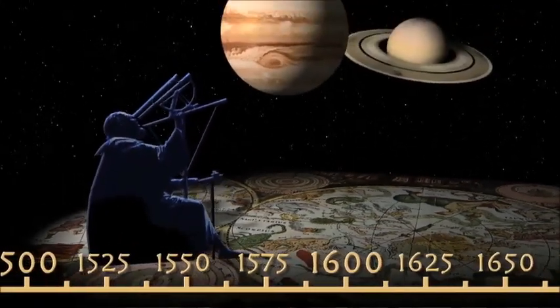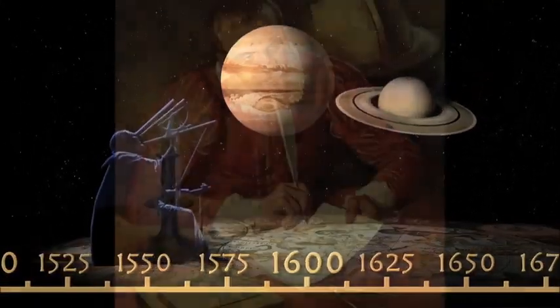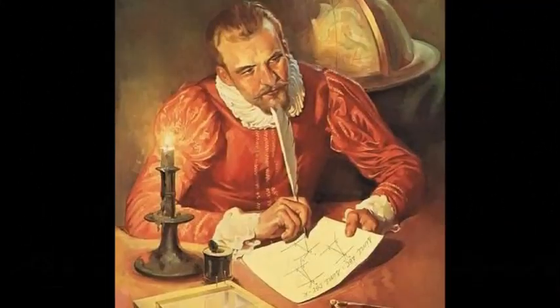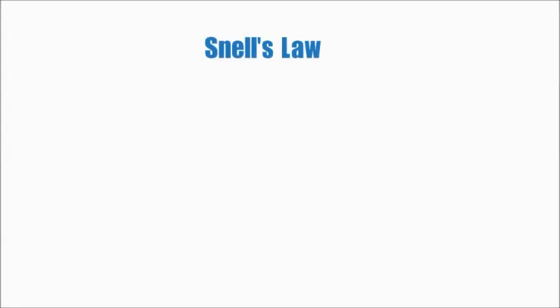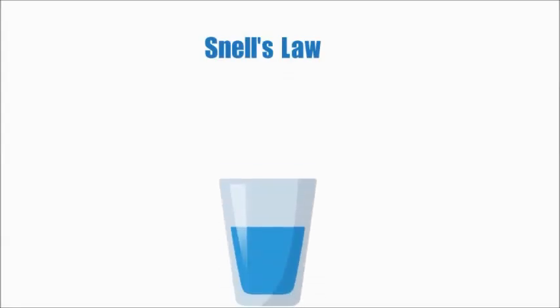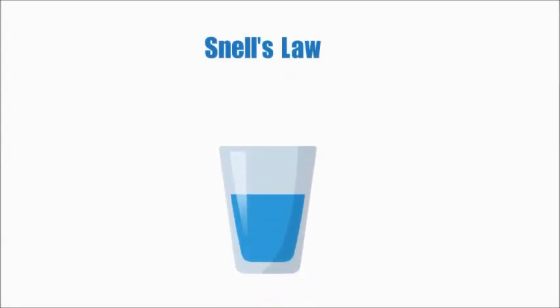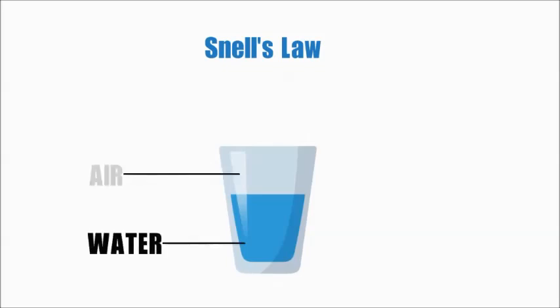In 1621, Willebrord Snell discovered a relationship now referred to as Snell's Law. This law describes and details how light behaves as it passes through two connected surfaces, as it relates to their respective refractive index.